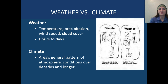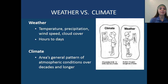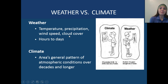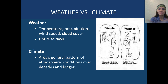So what is the difference between weather and climate? We use these words interchangeably many times, but for this class I want to make sure you know the difference. Weather is the temperature, precipitation, wind speed, and cloud cover, and we measure it in time increments of hours to days. The climate of an area is the general pattern of atmospheric conditions over decades and longer.